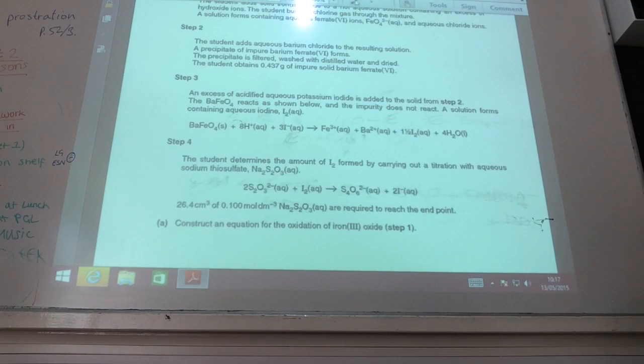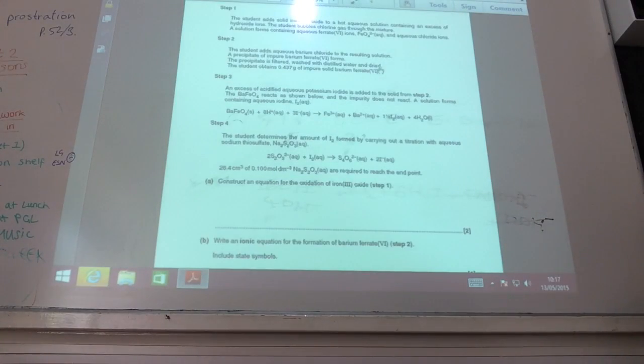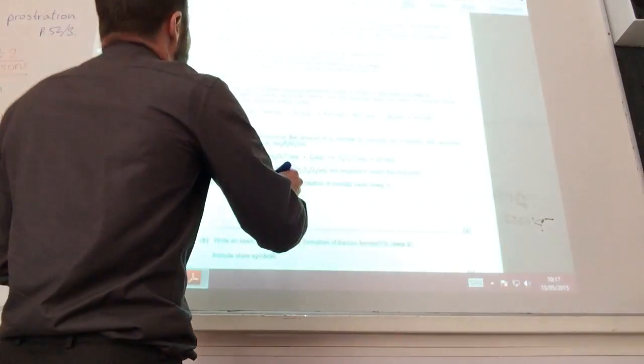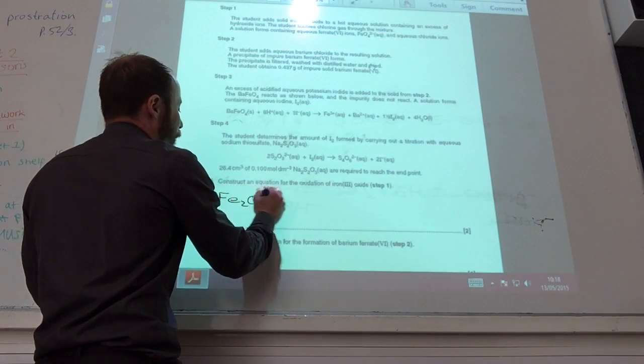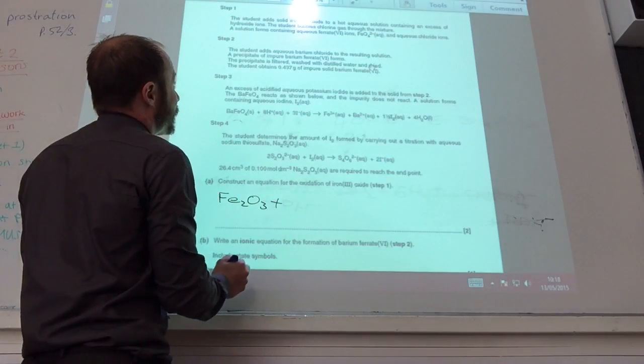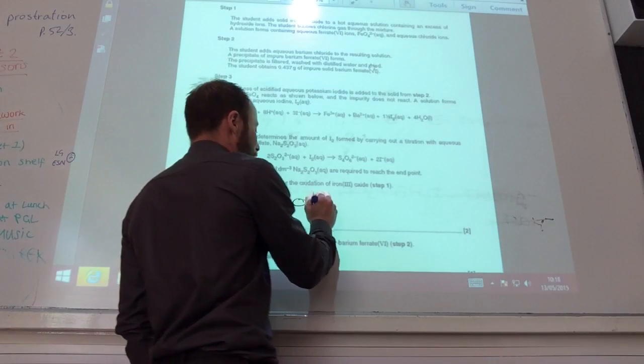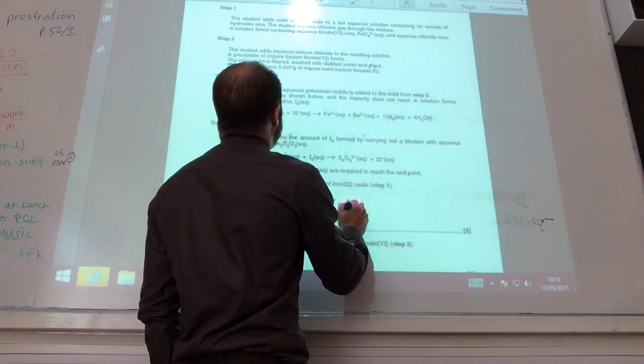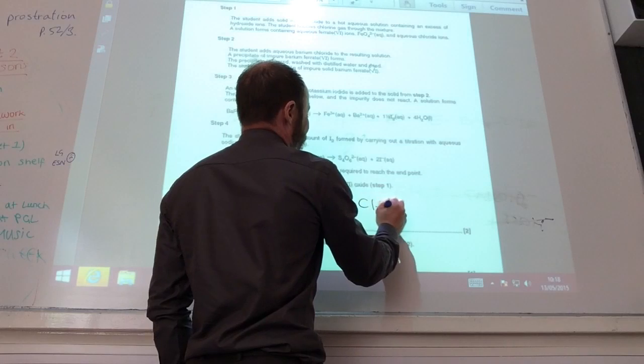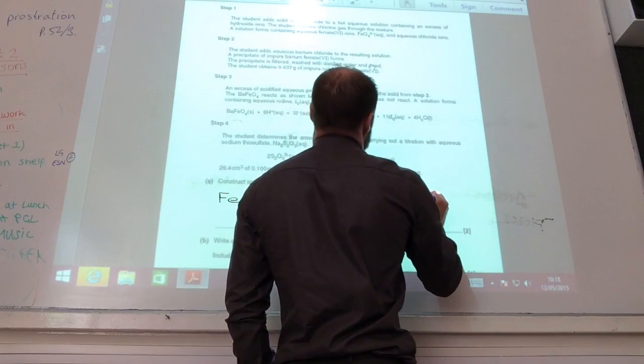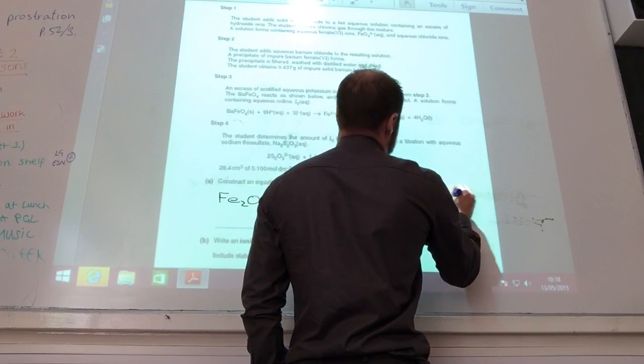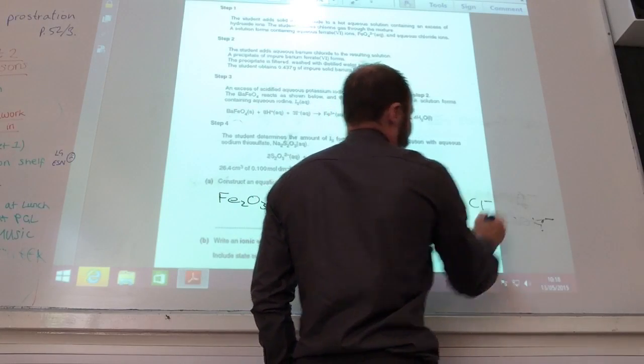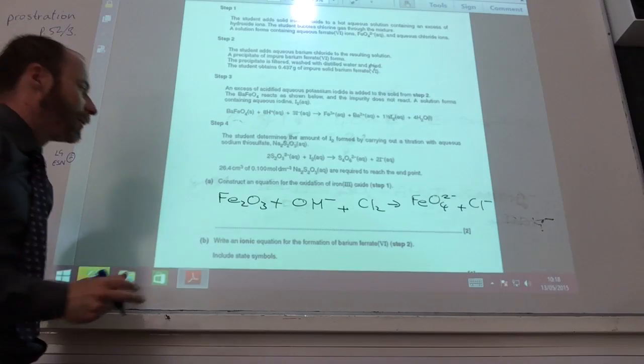So step 1, the student adds solid Fe2O3, which is iron oxide, to a solution containing hydroxide ions and bubbles chlorine gas through them to make a solution containing FeO4^2- plus chloride ions. That's what I've got so far.